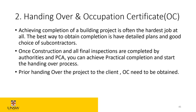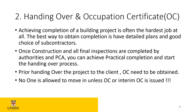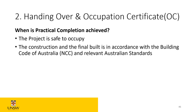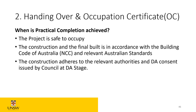Prior to handing over the project to the client, the OC needs to be obtained. No one is allowed to occupy or move in unless the occupation certificate — or an interim OC — is issued. When is practical completion achieved? When the project is safe to occupy and can be used; the construction and the final build is in accordance with the Building Code of Australia or NCC and relevant Australian standards; and the construction adheres to the relevant authorities and the DA consent issued by council. Everything has to tick all the boxes related to all the authorities and DA conditions.